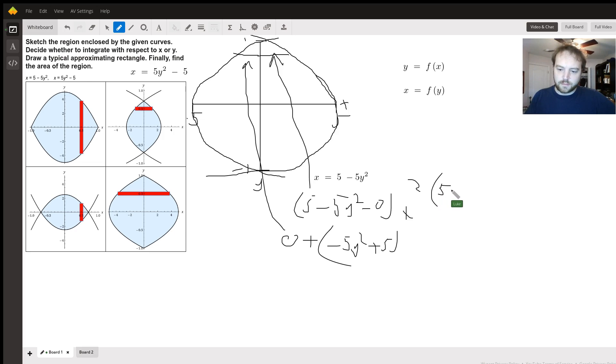So you're 5 minus 5y squared. That's going to be the function you're going to integrate, integrate this from negative 1 to 1 dy. And that's going to go from negative 1 all the way up to 1, and you have this function for the little bit of length that you're doing.